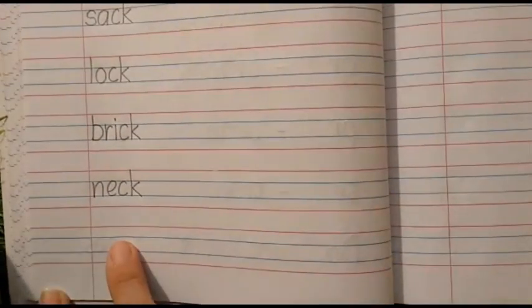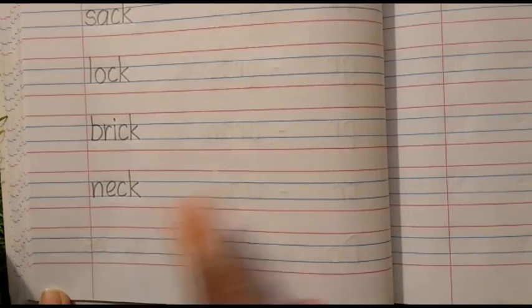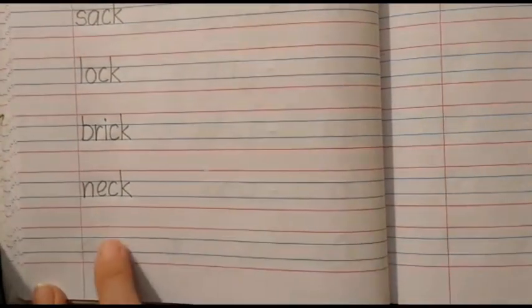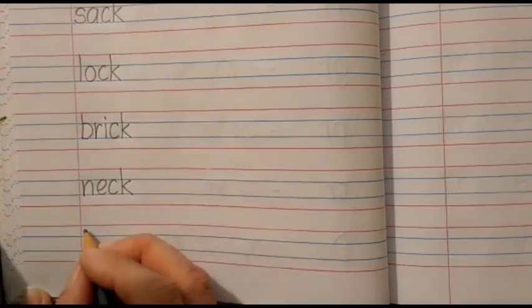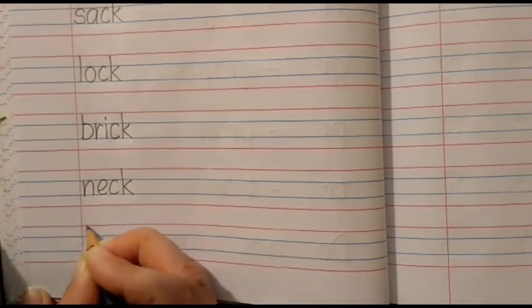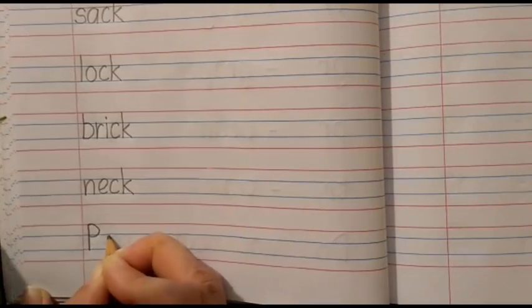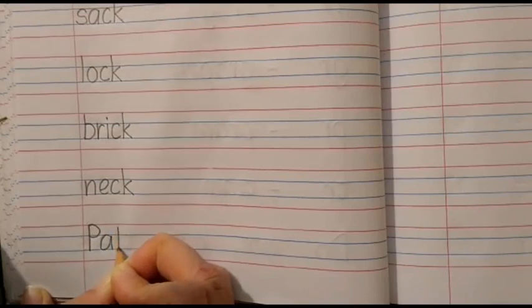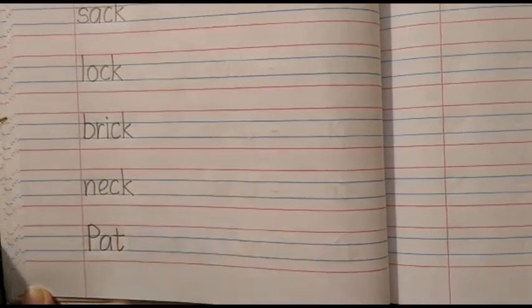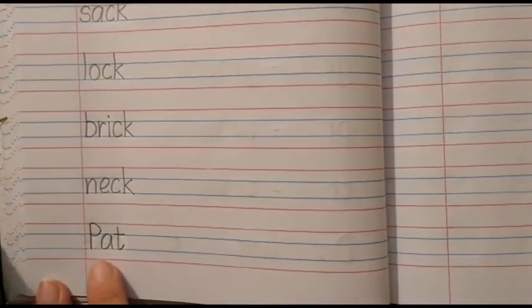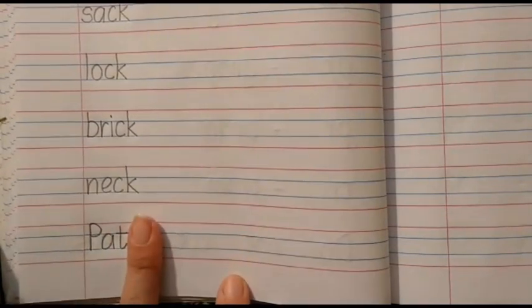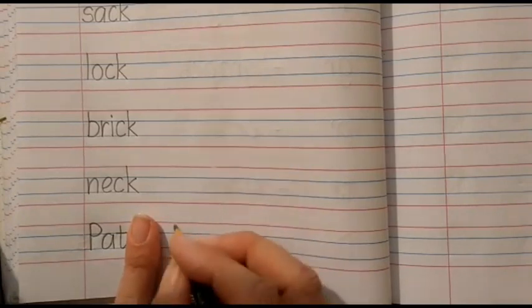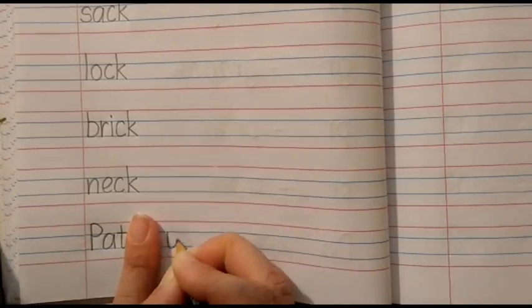Now in the last line we will write a sentence. Children, do you remember when we write a sentence, we begin with a capital letter, right? So let us write capital P, the word PAT. Please read it. The word is PAT. After writing PAT, put your index finger. And then you write.